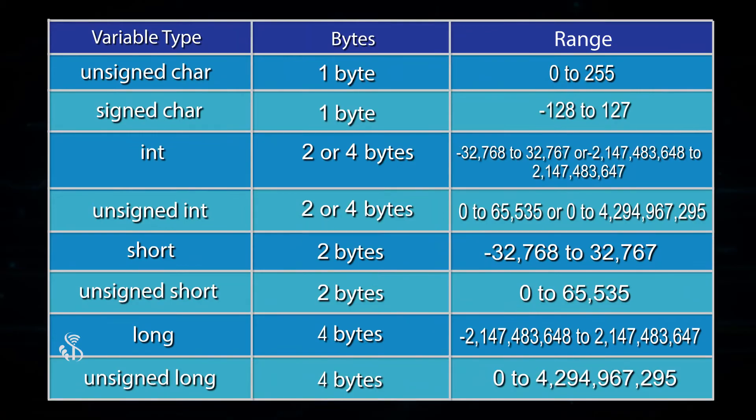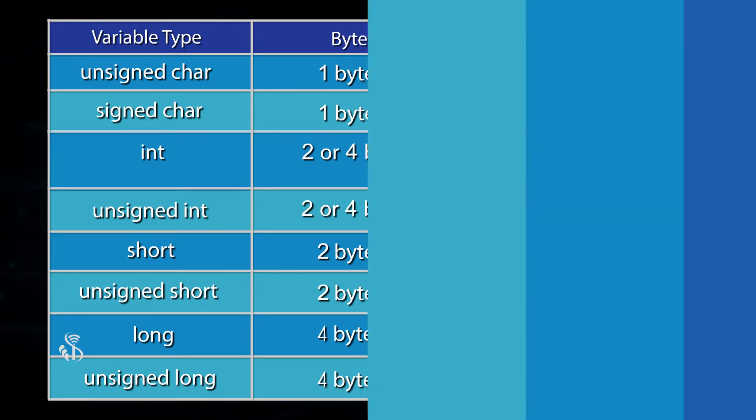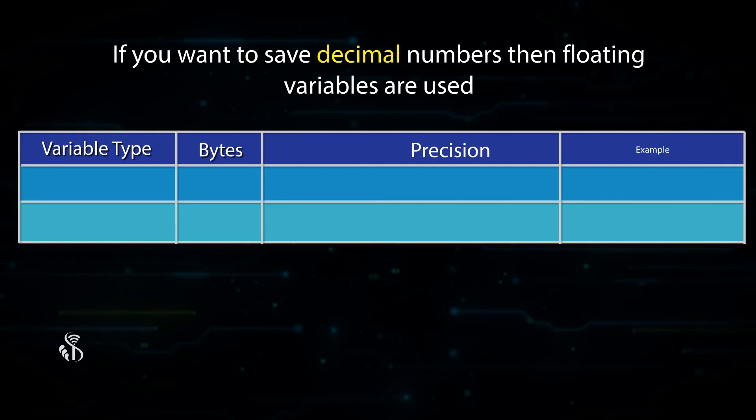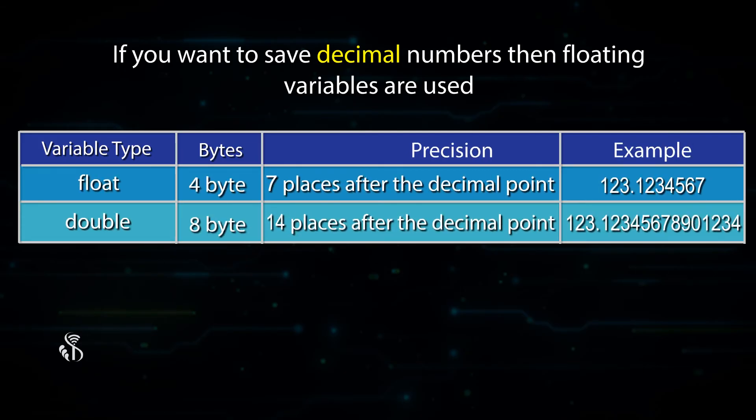This table gives us details of how many bytes of data are required for each variable type and the range of the data that it can store. If you want to save decimal numbers, then floating variables are used.